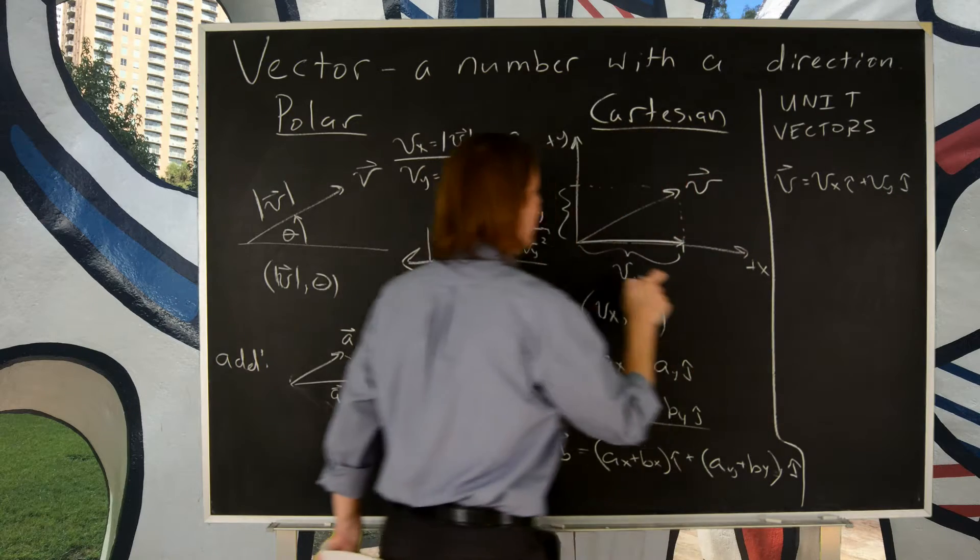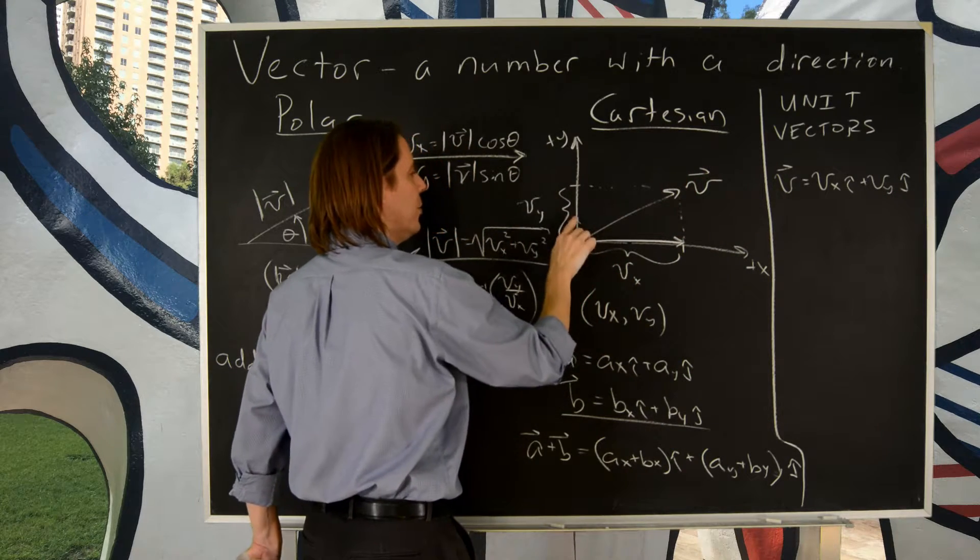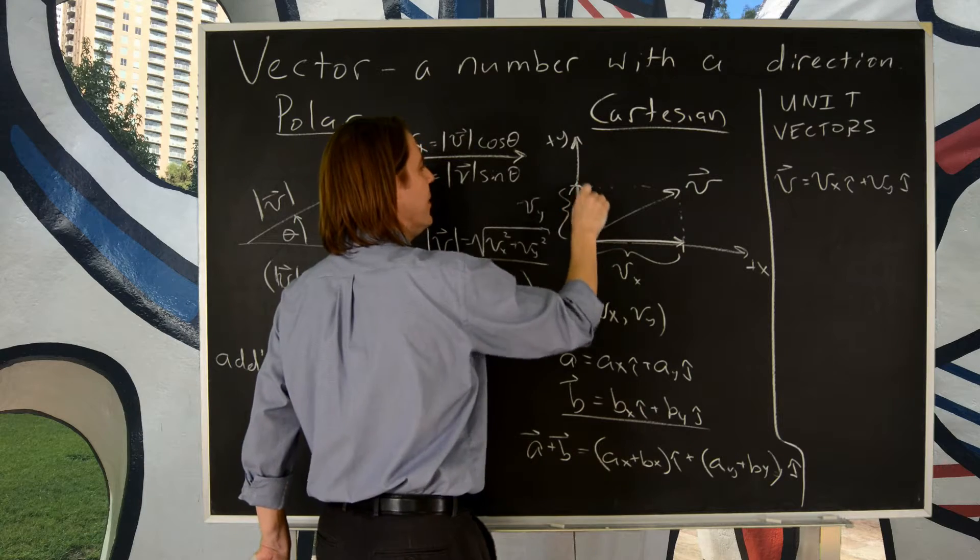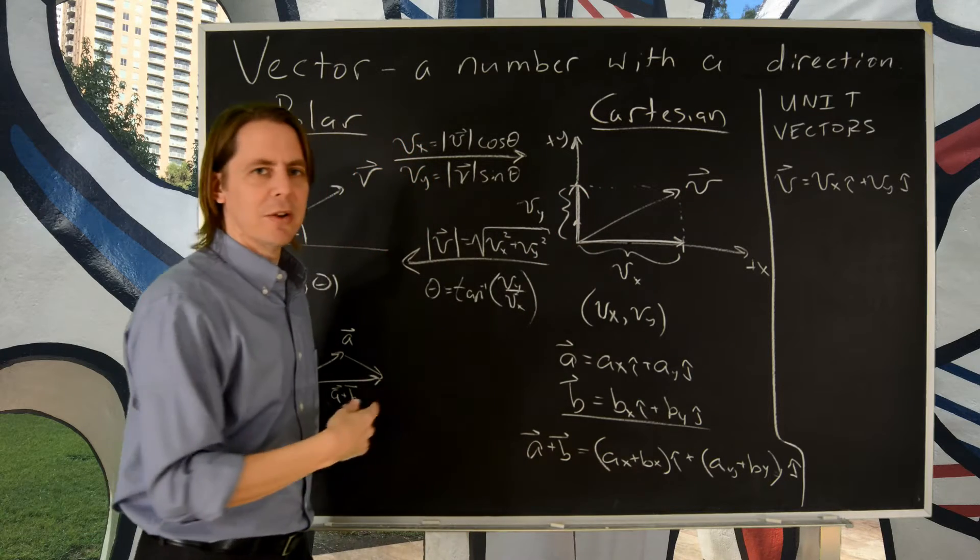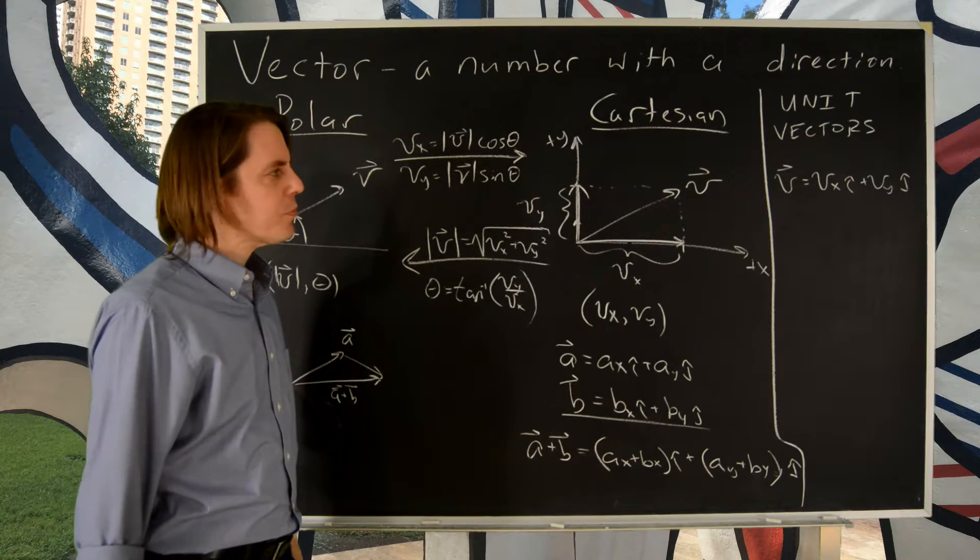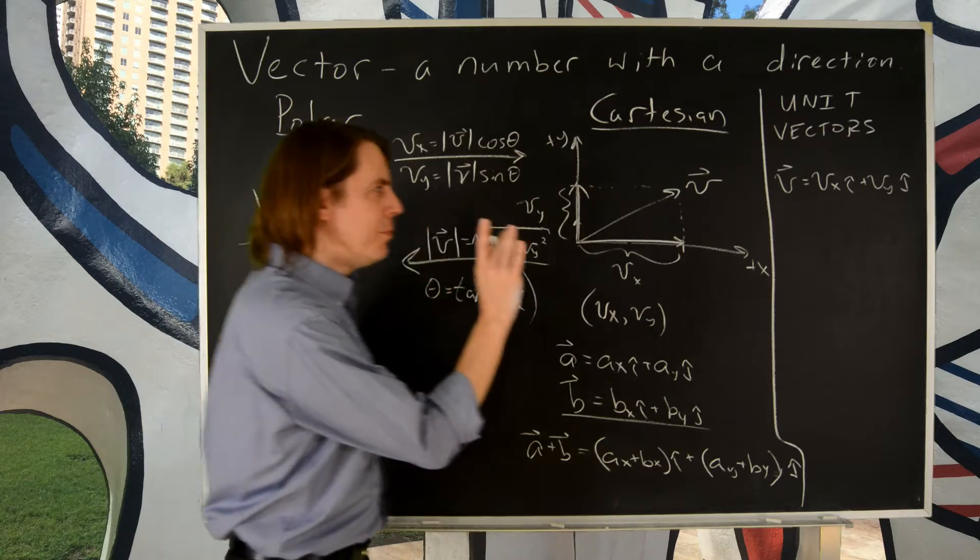And j hat, same thing. This is the unit vector. It's that way. So when you multiply it by VY, VY j hat is a vector. And it has the exact magnitude of VY. So it bothers people to see them there. They don't know what to do with them.